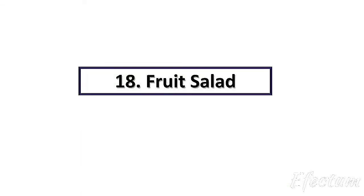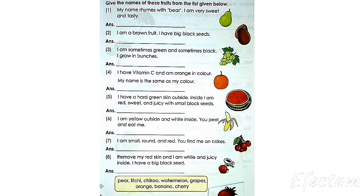Chapter 18 — Fruit Salad. Give the names of these fruits from the list given below. Number 1: my name rhymes with pear. I am very sweet and tasty. Let's look at the blue box. Yes, it rhymes with pear — the answer is pear.